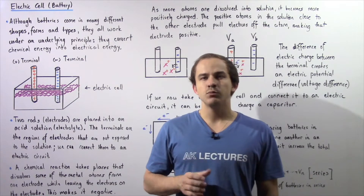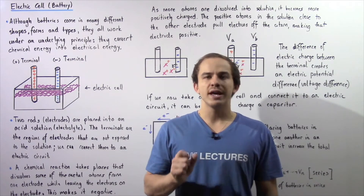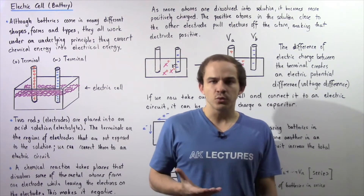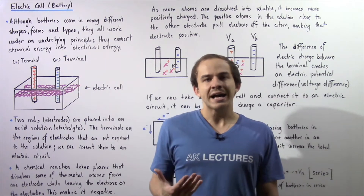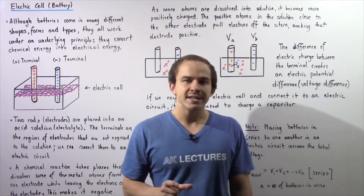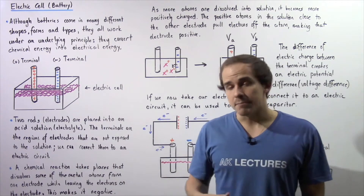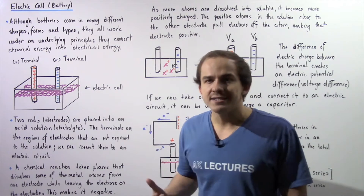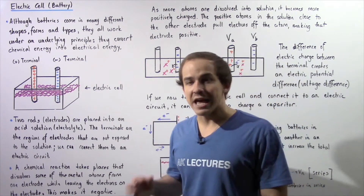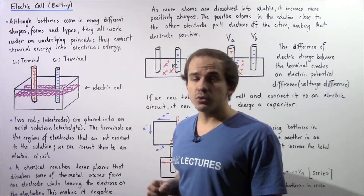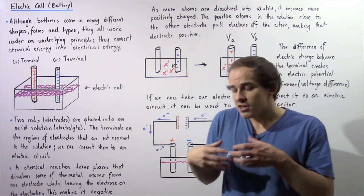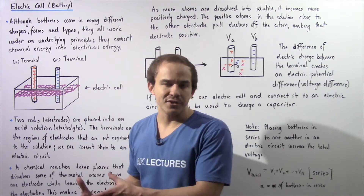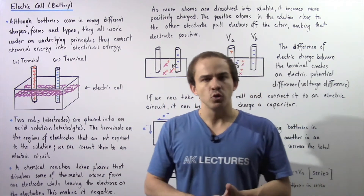When we discussed capacitors, we said we can use a device known as a battery to charge our capacitors. In fact, we can use batteries to provide a supply of electricity to different types of devices that require it — for example flashlights, computers, and cars. Now although batteries come in many different forms, shapes, and types, all batteries work under the same principle: they transform chemical energy into electrical energy that can be used to do useful work.